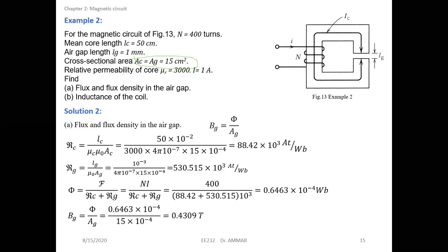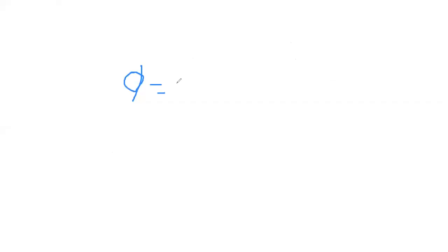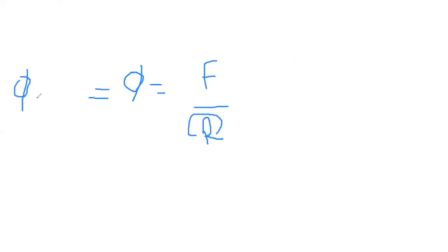I will explain it on the board to be more clear. So the total flux phi equals F over R. Total flux also equals the linkage flux plus the leakage flux. So in the air gap, we are going to use only the linkage flux, because the whole flux has been transferred through the core.